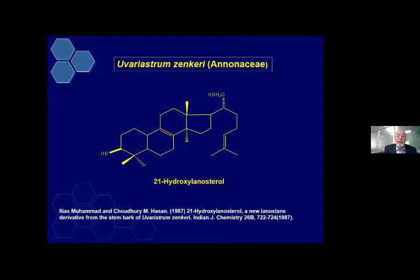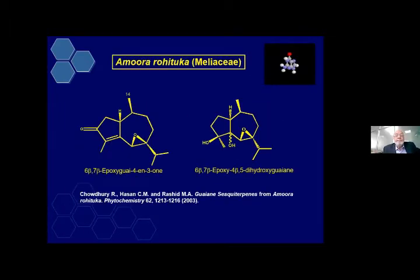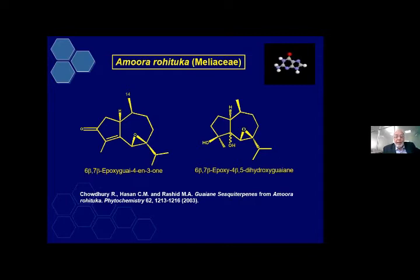Then Uvaria strum, Goniothalamus, and again Uvaria strum disease. We isolated another new compound, 21-hydroxydinosterone. Then from Melia indica, which is from the Meliaceae family, we isolated neurofen-type derivatives and published in Pharmazie. Then Amoora rohituka, also Meliaceae family — these are sesquiterpenes, two new compounds with slightly unusual structures, also published in Phytochemistry. Then from Polyalthia longifolia and Annonaceae, we isolated a new compound, 16-beta-hydroxyclerod, a clerodane series diterpenoid, which is quite uncommon.